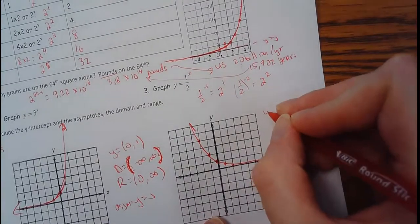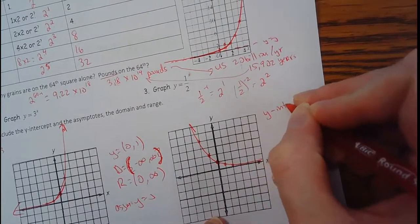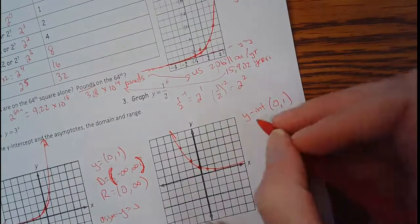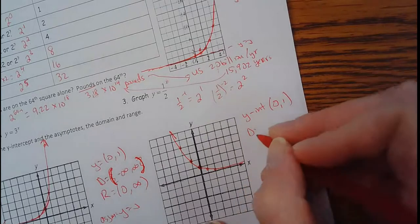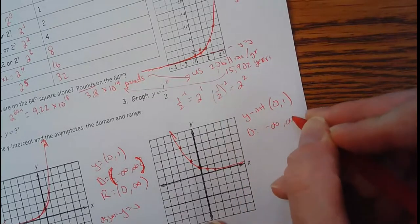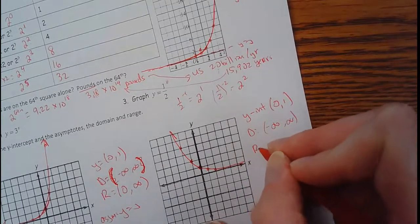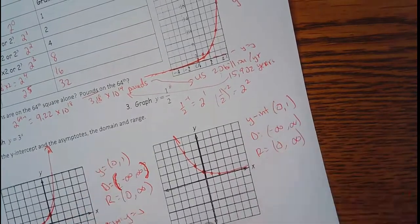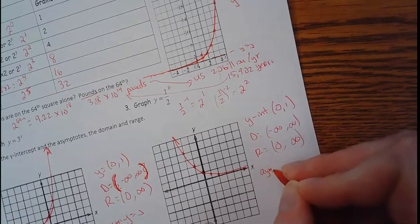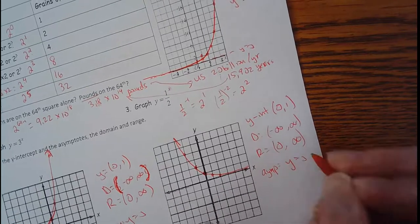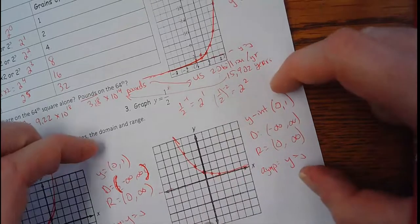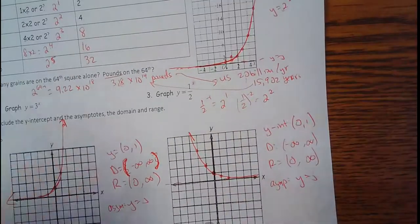My y intercept, zero, one, same thing. Domain, negative infinity to infinity. And my range zero to infinity. It's the exact same answer so far. And then the asymptote y equals zero down here. This guy has a flat line going around here. So they actually have the exact same answers. Two different functions have the exact same answer.